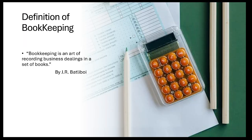Bookkeeping is an art of recording business dealings in a set of books. This definition is given by J.R. Batley Boy. So what is the meaning of bookkeeping? Bookkeeping is an art, a skill. Set of books means general or subsidiary book of the business. So bookkeeping is an art of recording business dealings in a set of books.